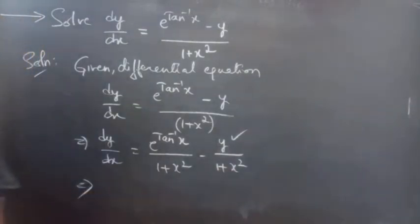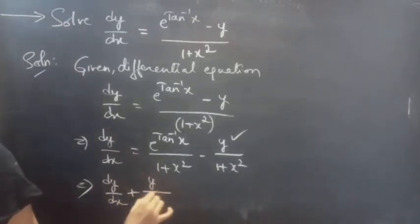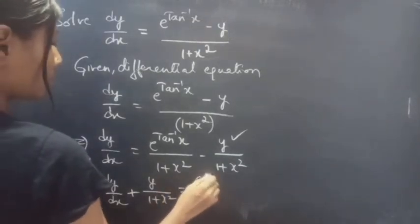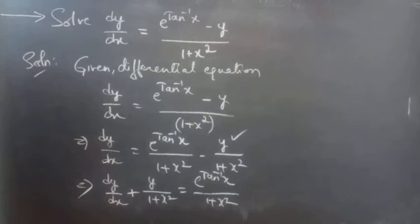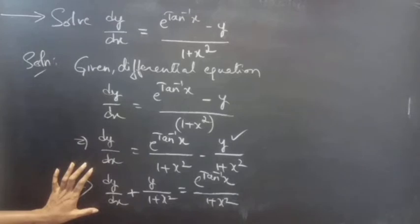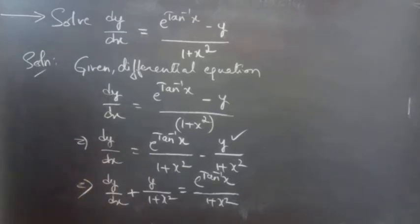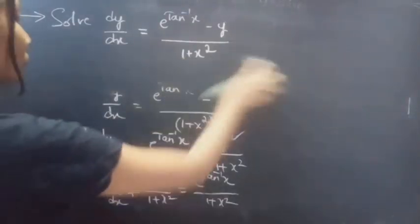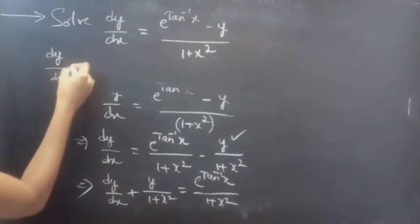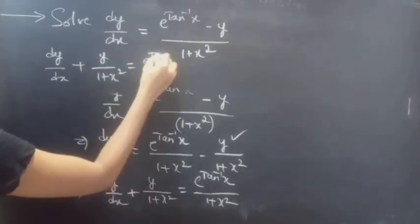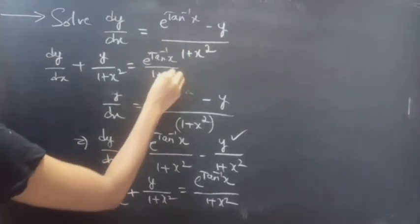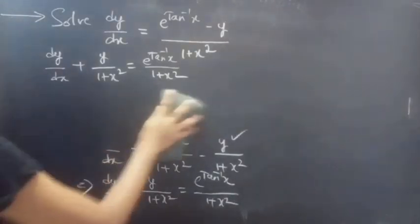Now, take this term to the LHS and get dy/dx plus y/(1 + x²) equals e^(tan⁻¹x)/(1 + x²). This is in linear differential equation in y form, which is linear in y.